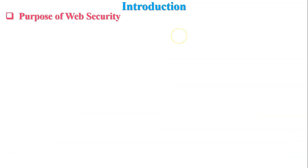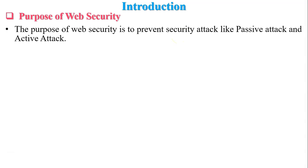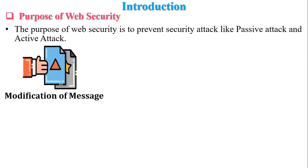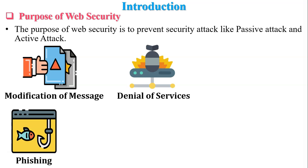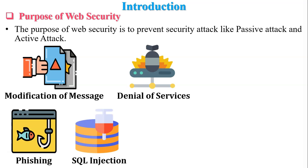The purpose of web security is to prevent security attacks like passive attack and active attack. Some examples of active and passive attacks that are web security threats include modification of message, denial of services, phishing, SQL injection and malwares.